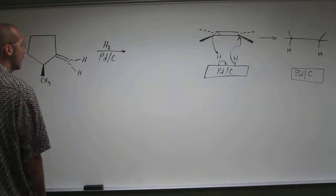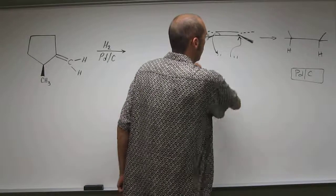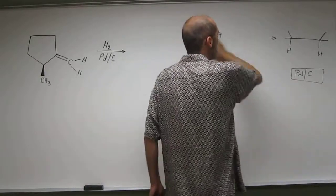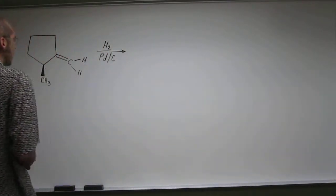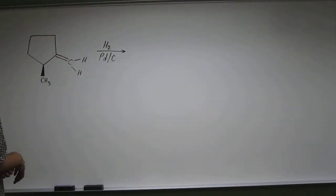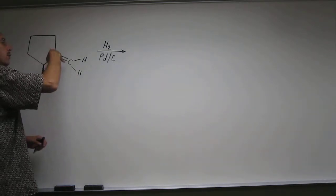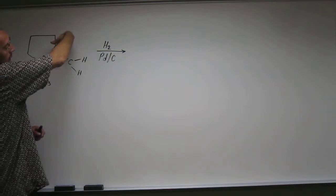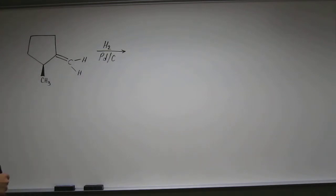So you would expect to form the syn product here, the syn hydrogenation product, and you do. But in this case there are going to be two of them. Why? Because we've got this methyl group here, pointing up, pointing towards us. So we can have the hydrogen add from the top side here, or from the back side, or the bottom side, whichever way you want to look at it.